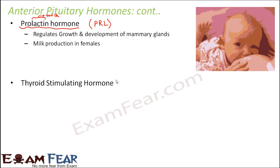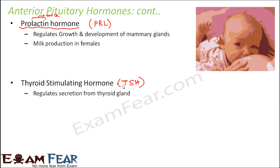Next is the thyroid stimulating hormone, often written as TSH. This hormone regulates the secretion from the thyroid gland. The thyroid gland secretes hormones like T3, T4, and calcitonin. When to secrete those hormones is decided by the pituitary gland by secreting TSH. Whenever TSH is secreted from the anterior pituitary, the thyroid gland gets a signal to secrete thyroid hormones T3 and T4. That is how TSH controls the synthesis and secretion of thyroid hormones.